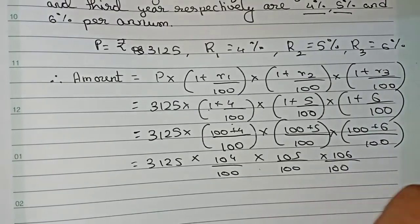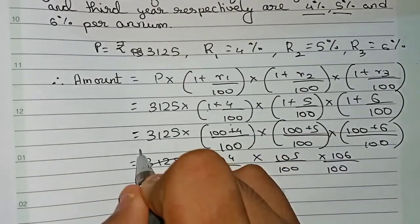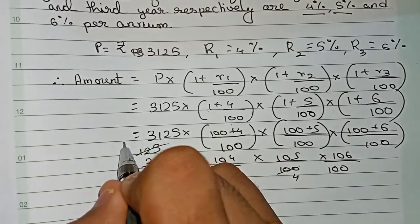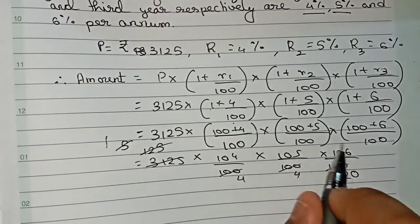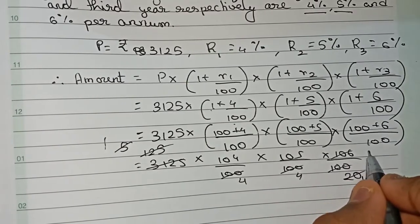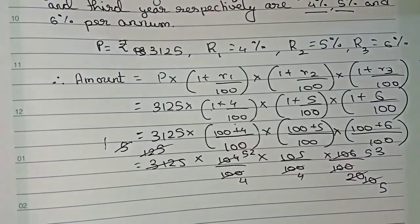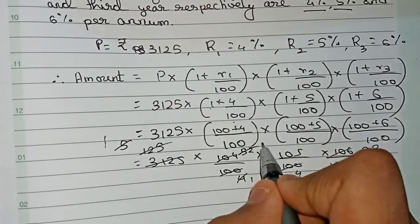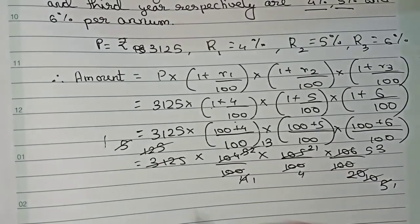First we are cutting 3125 and 100 by 25. 25 fours are 100 and 25 into 125 will be 3125. Now again we can cut by 25 this 100, so again 4 and now it will become 5. Now 5 we can cut 100 directly. Cutting the numbers, it becomes 53, then 52, then we cut 4 and 52 to become 13, and 5 and 105 to become 21.